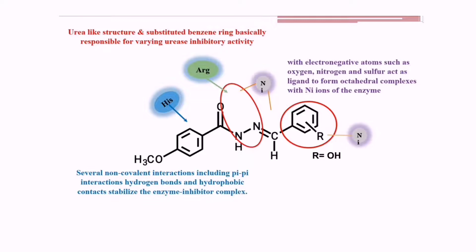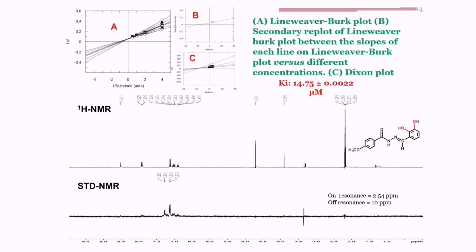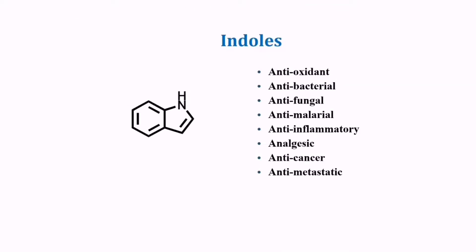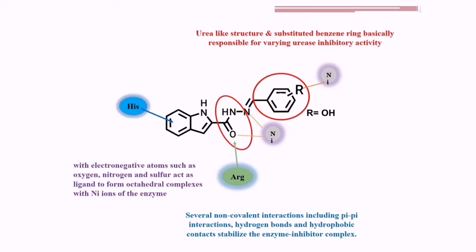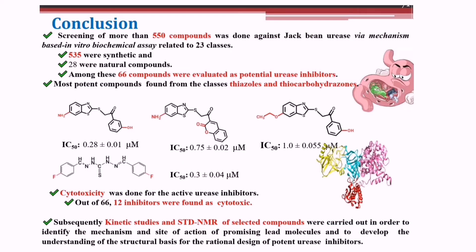This depicts the urea-like structure. And this is the NMR. Now indole, which has antioxidant, antibacterial, antifungal, anti-inflammatory, and anti-cancer properties, so we can use it to treat H. pylori infections. This is the chemistry of urease inhibitors.